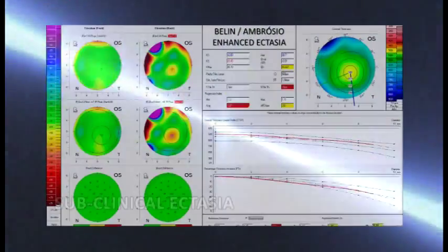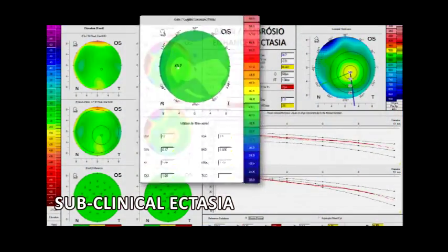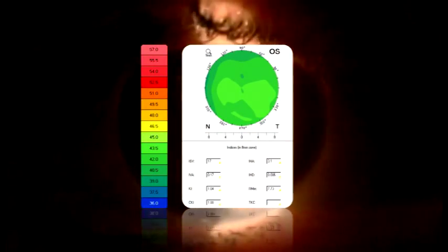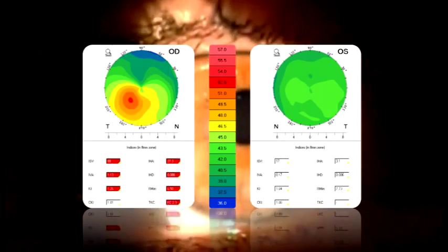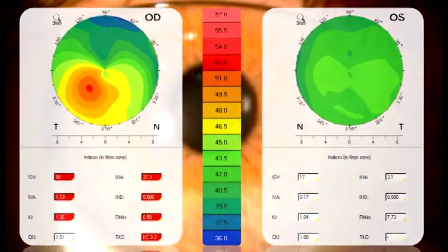Including subclinical cases is fundamental to train and to test such enhanced ectasia detection approaches. Eyes with no detectable abnormalities on topometric maps from patients with clinical keratoconus in the fellow eye have been used, but this group is not ideal as some cases may have true unilateral ectasia due to excessive ocular trauma such as eye rubbing.